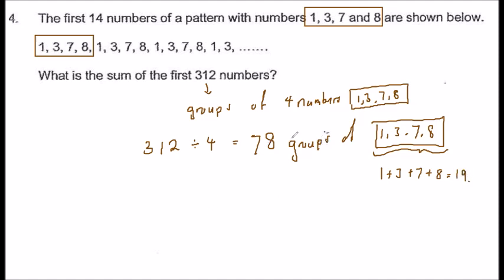So 78 groups of this 19, isn't it just 78 times 19? And we will have the answer 1482.